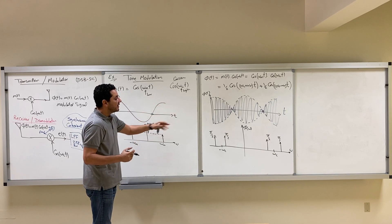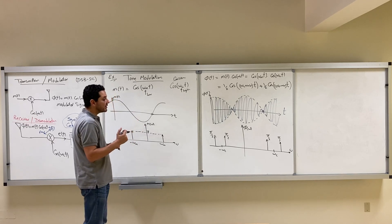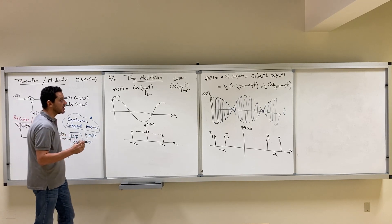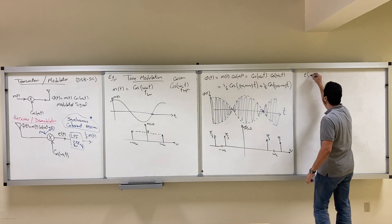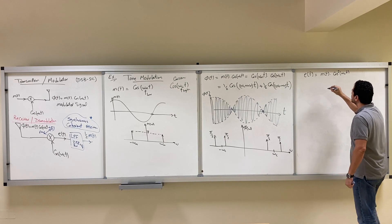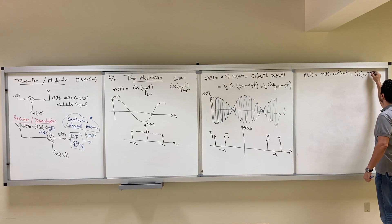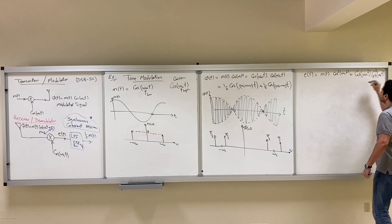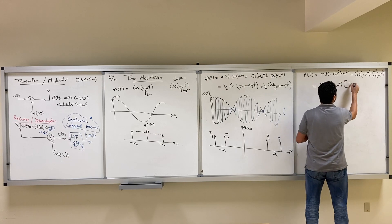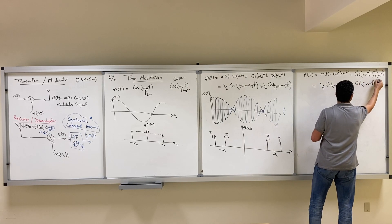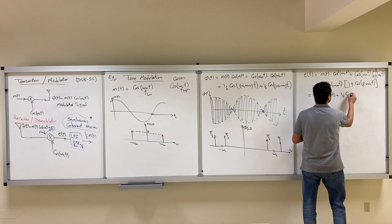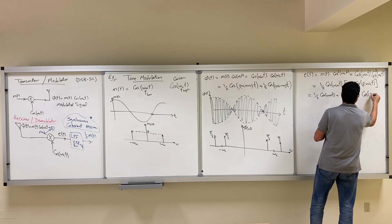Now let's go to the demodulator. At the receiver, we multiply phi(t) by cosine again. So E(t) = M(t) · cosine²(omega_C t) = cosine(omega_M t) · cosine²(omega_C t). Using the identity cosine² = half(1 + cosine of double the angle), this gives half cosine(omega_M t) plus half cosine(omega_M t) · cosine(2 omega_C t).